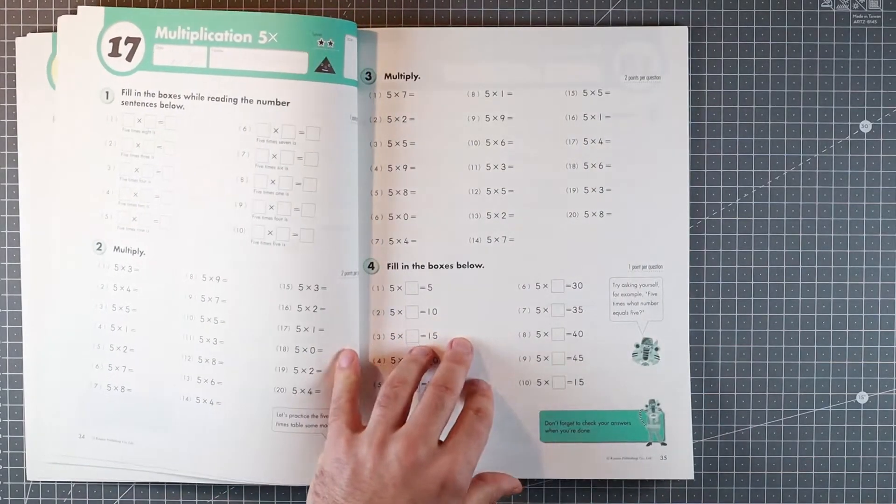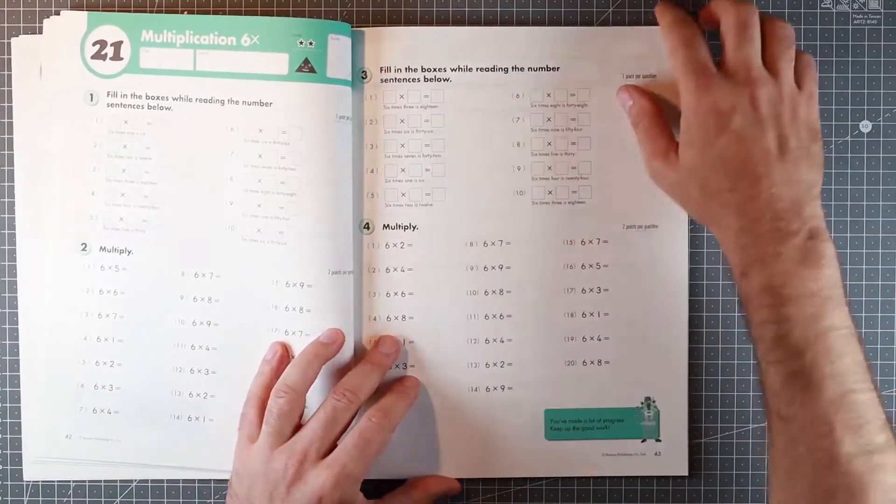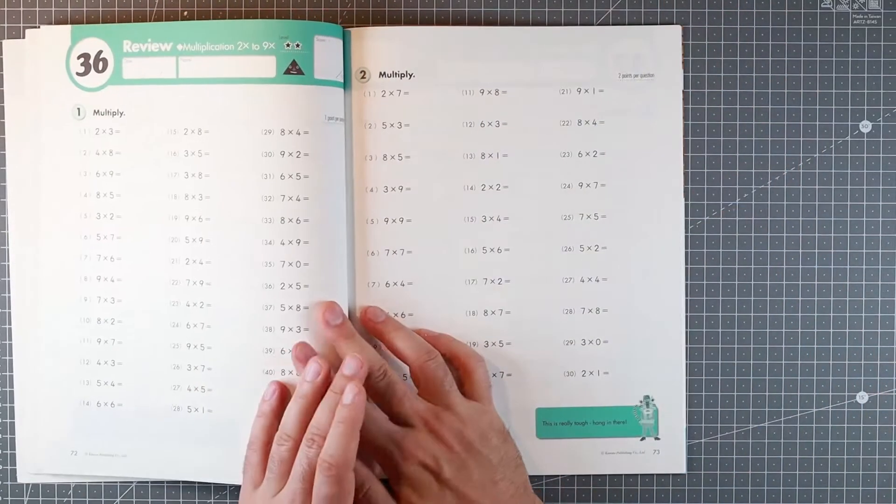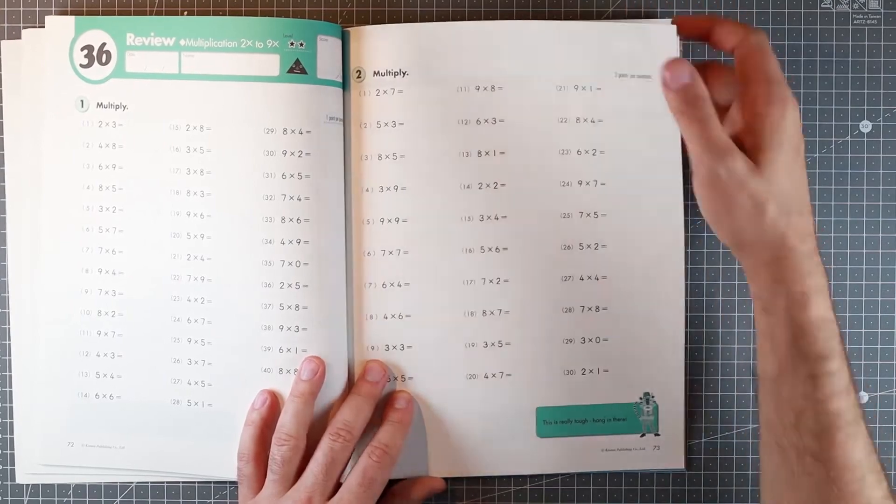They just go up and up. This is basic multiplication, so it is quite repetitive as you expect Kumon to be. Towards the end they mix them up.